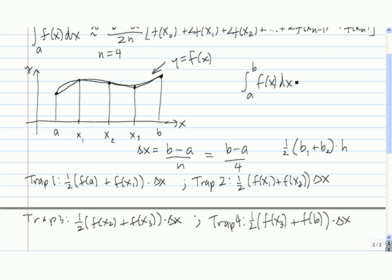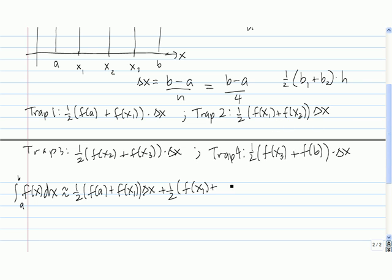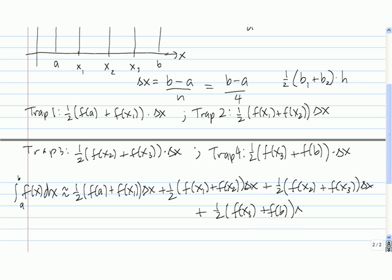To approximate the integral from a to b of f of x dx using these four trapezoids, we add up these four areas. We can clean this up by noting that one half and delta x are factors of each term, so we factor that out.